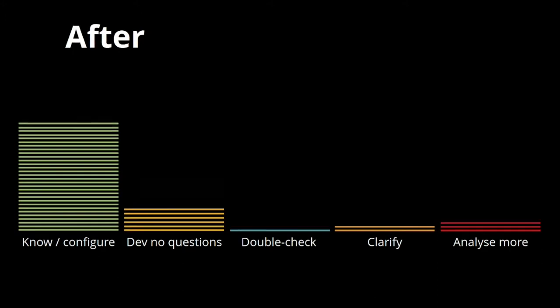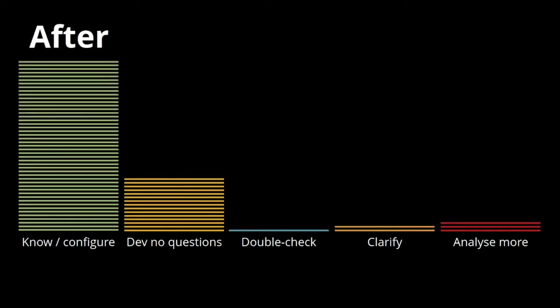At the end of the workshop, ideally you have something like this. During the workshop, when you make notes on the cards, you also have your highlighters with you so that you can change the color. Ideally, a lot of the stuff from Double Check, Clarify, and Analyze More moved into the first two categories — either Know and Configure, or Development No Questions. That was the whole purpose of the workshop: to go through as many requirements as possible and get more clarity, so that we could give better pricing information as part of the RFP.